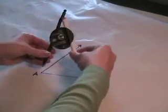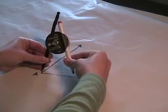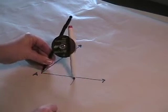Put the compass point on vertex A. Draw an arc that intersects the sides of angle A.